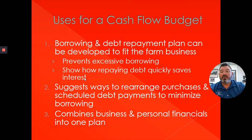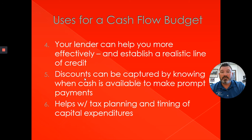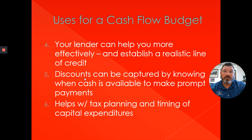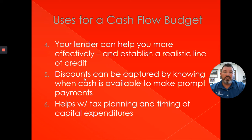Maybe you'll combine business and personal financials into one plan to simplify things, or you may need to break them out to separate personal from agricultural business. Your lender can help you more effectively when they understand your cash flow needs. In addition to your enterprise budget, depreciation schedule, income statement, and balance sheet, they can advise you on establishing a realistic line of credit. You can also find opportunities to capture discounts on products by purchasing ahead of time or paying on a certain schedule — if your cash flow budget shows you'll have cash available to do that, it's a great advantage.